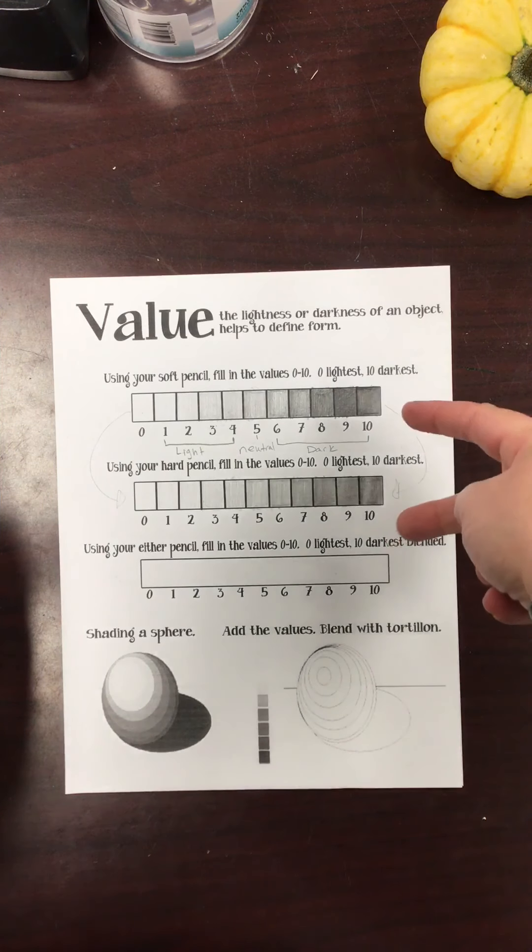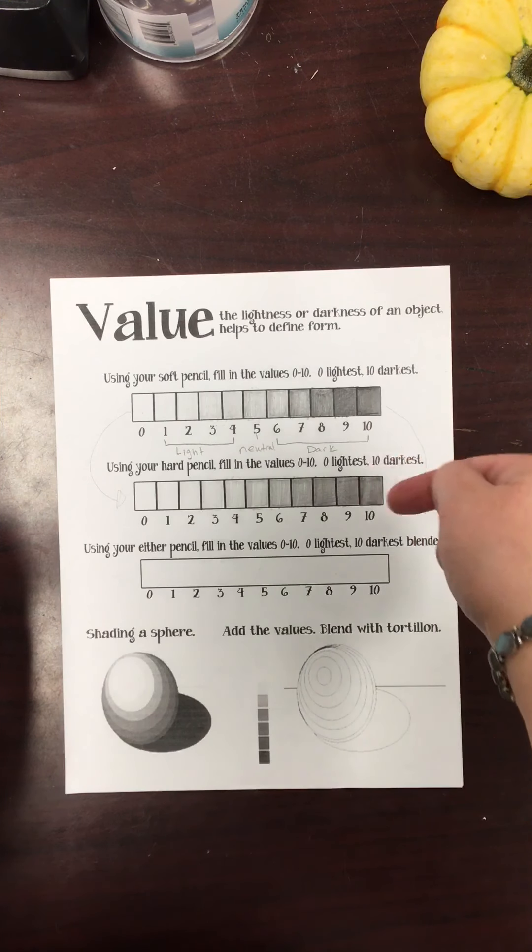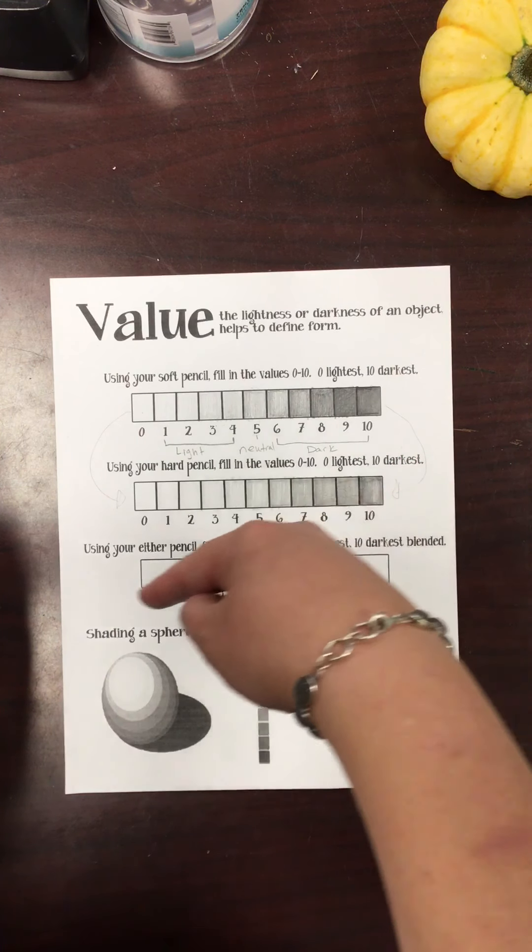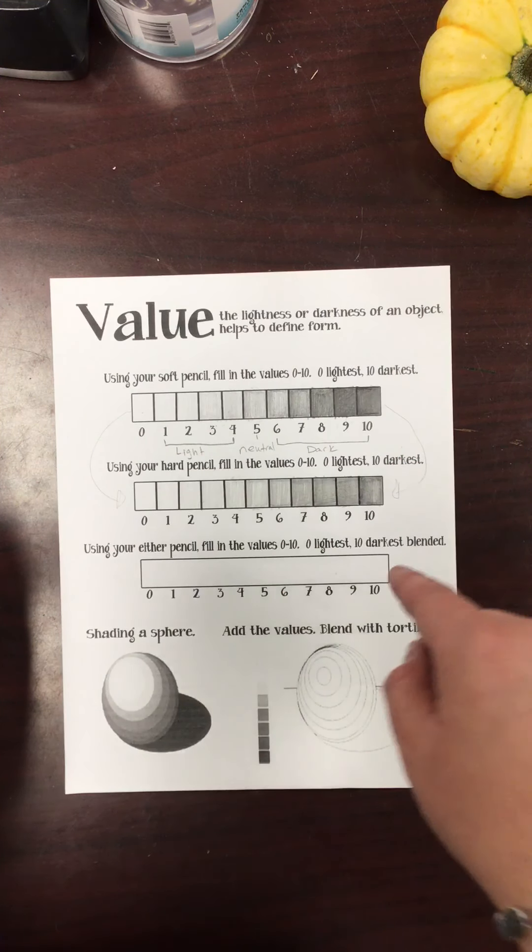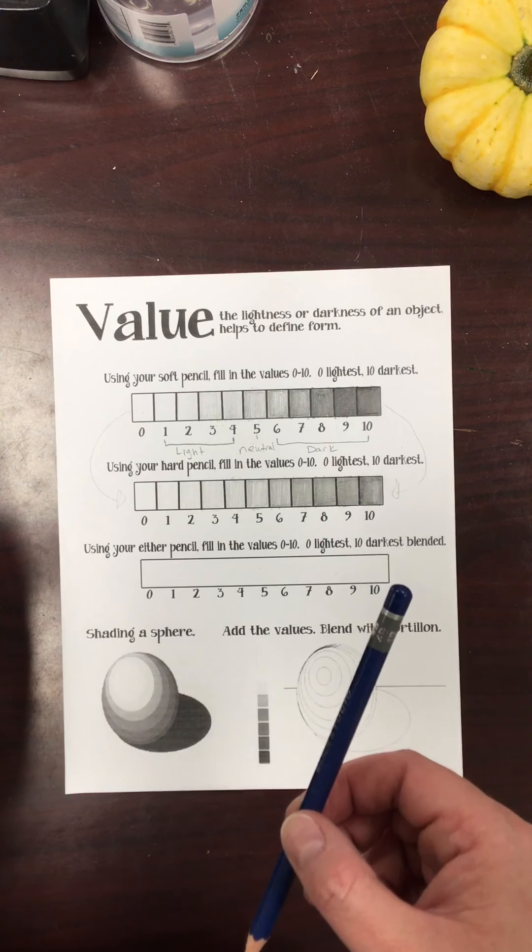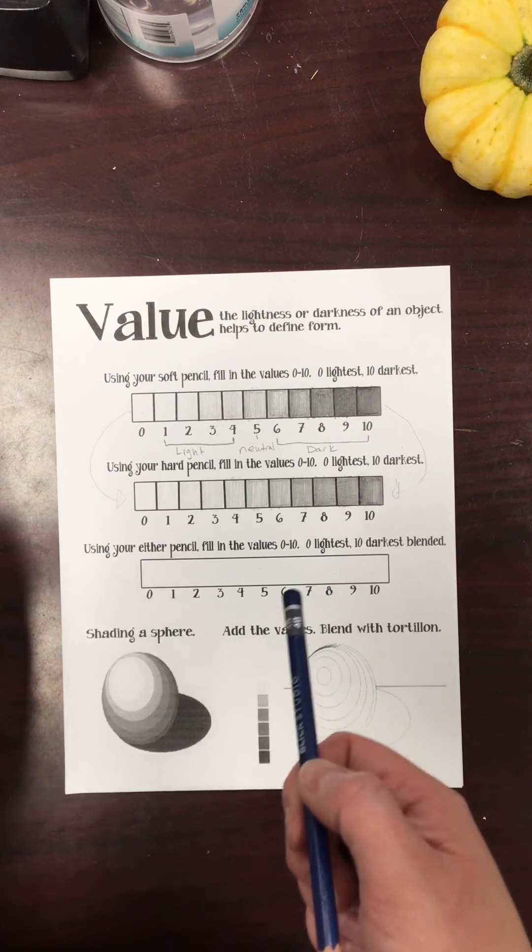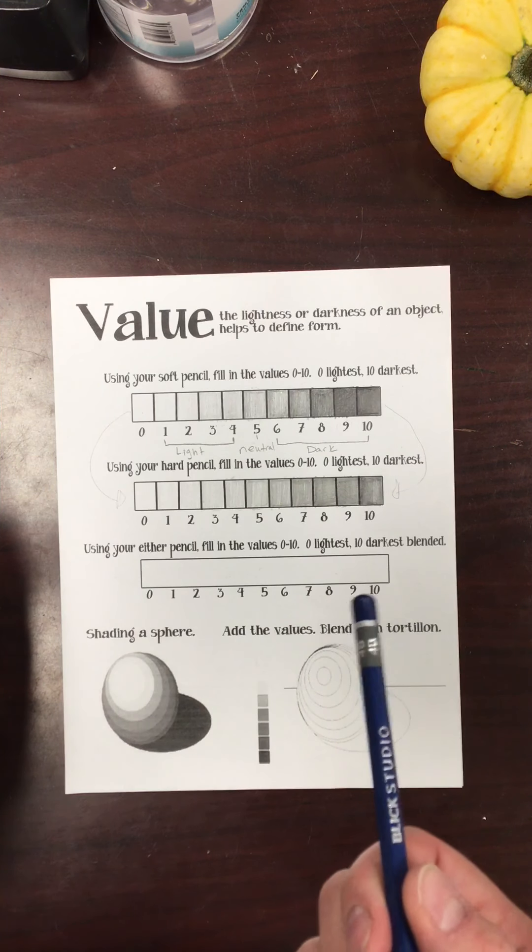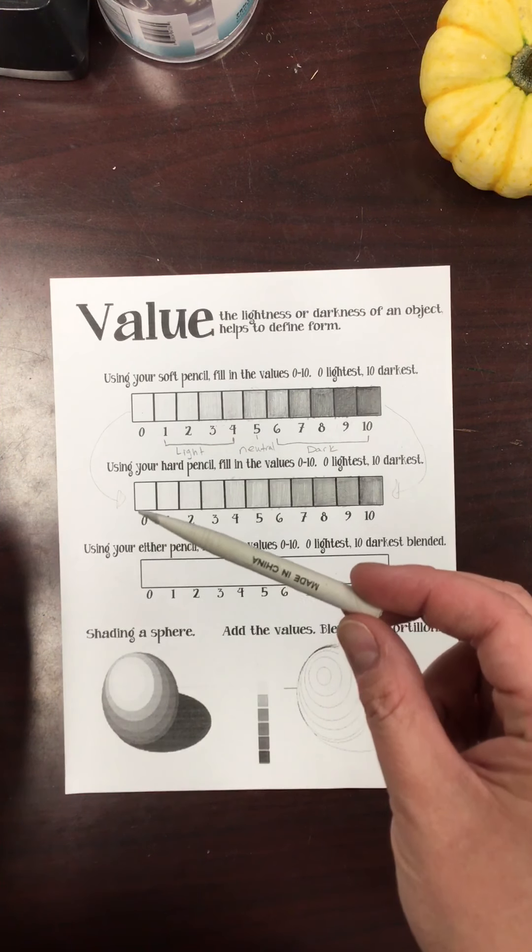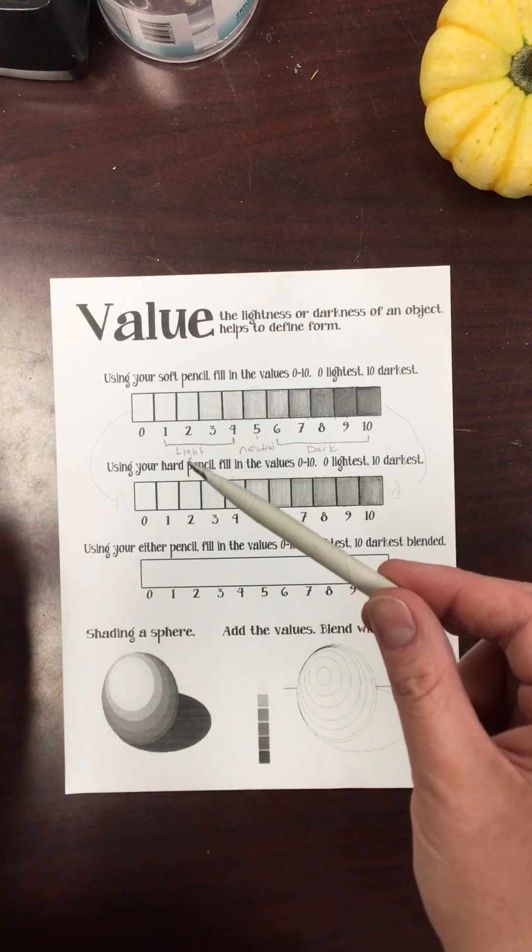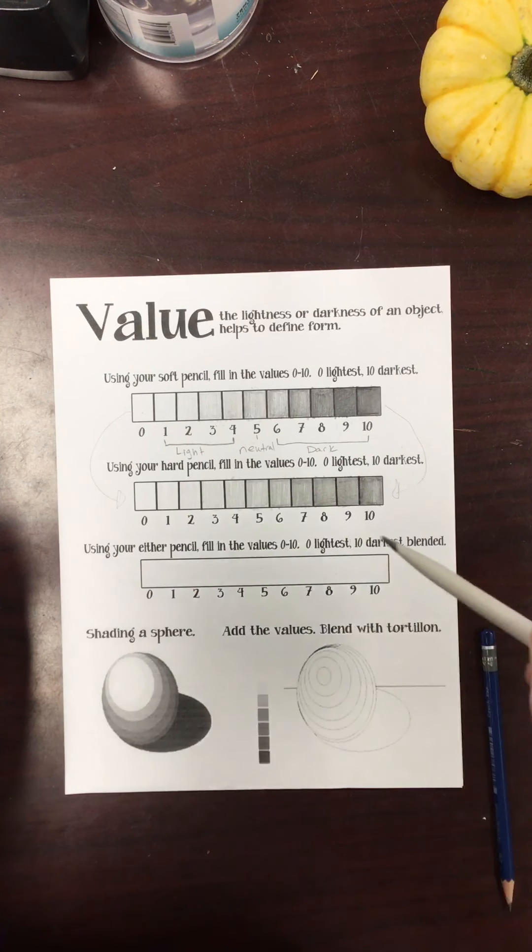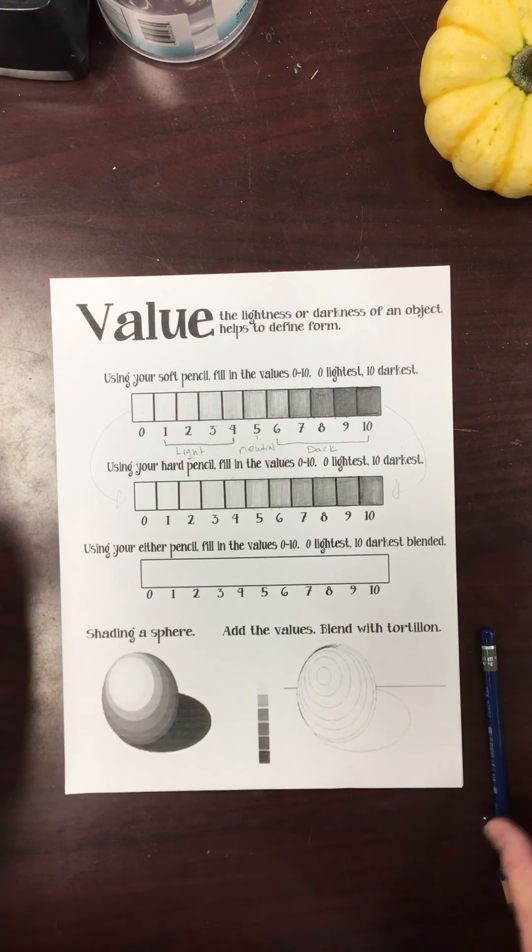Alright guys, you can see I've completed both of my value scales up here. This one I used the B pencil, this one I used the H pencil. Now I'm going to go ahead and complete this value scale, and this one is all about blending. So hopefully I can get it on the first try. Your 4B pencil may be a lot easier to use on this one, so that's what I'm going to personally use instead of the H. Then you also have another tool in your supply kit and it's this - this is called a tortillion and it's actually just a graphite blender. So I'm going to show you how you use this and how you use it correctly on this scale.